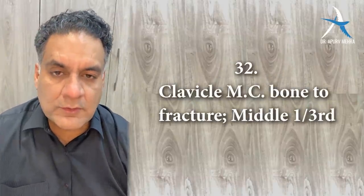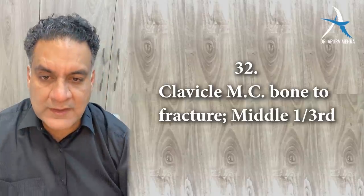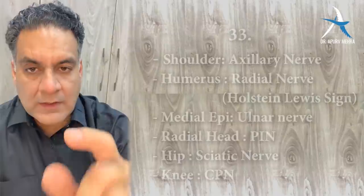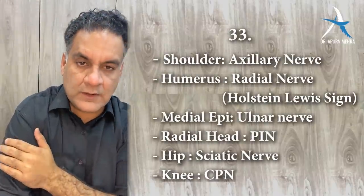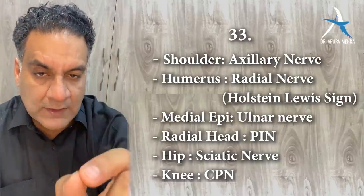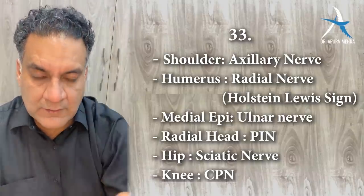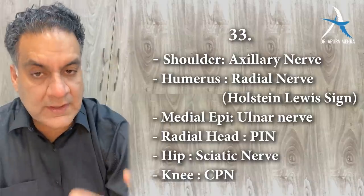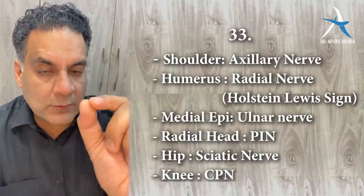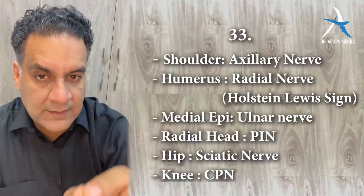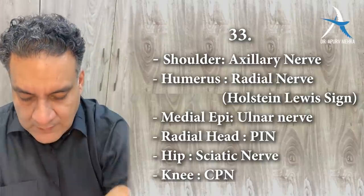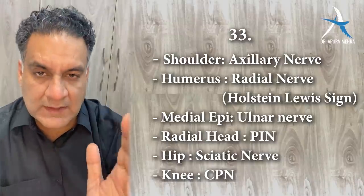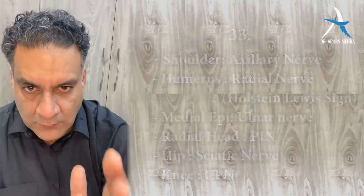Point number thirty-three: shoulder injury — axillary nerve is involved. Humerus fracture — radial nerve is involved. Behind the medial epicondyle injuries and elbow dislocation — ulnar nerve is involved. Dislocation or damage to the radial head — posterior interosseous nerve (a branch of radial nerve) is involved. Hip — sciatic nerve. Knee — common peroneal nerve.